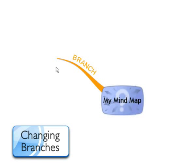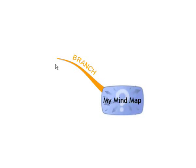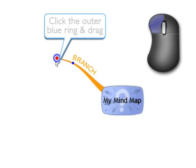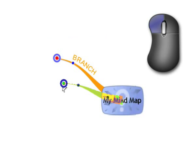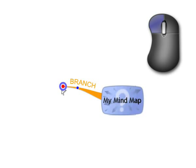To move or change the length of a branch, hover your cursor over the end of it until you see the target appear. Click on the outer blue ring of the target and drag in any direction. When you have reached your desired length and position, release the mouse.